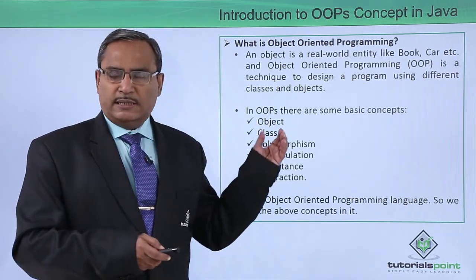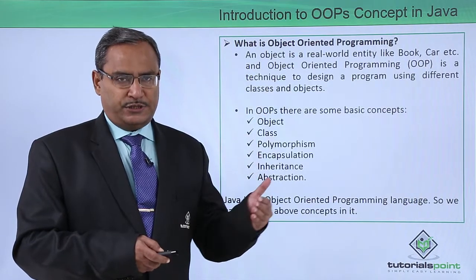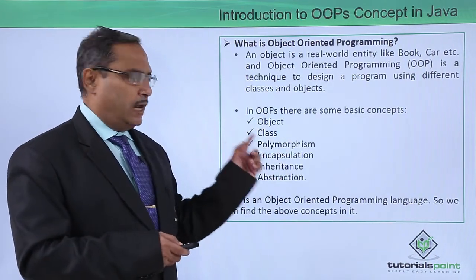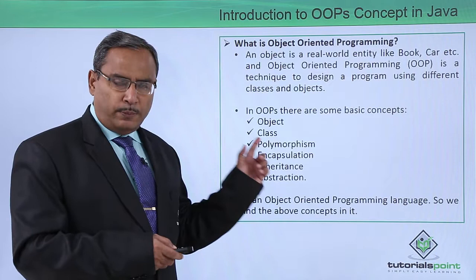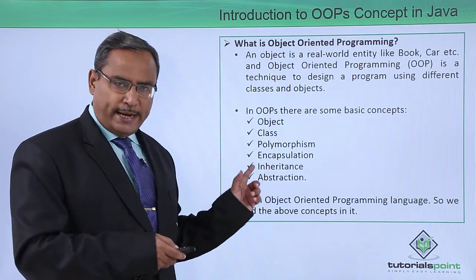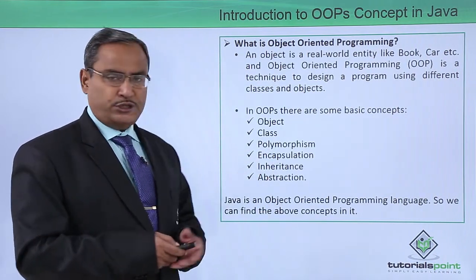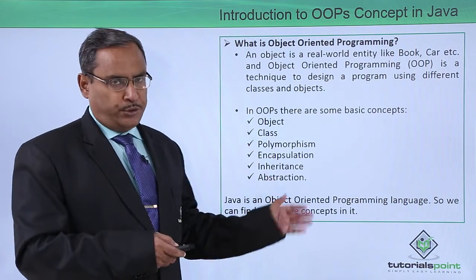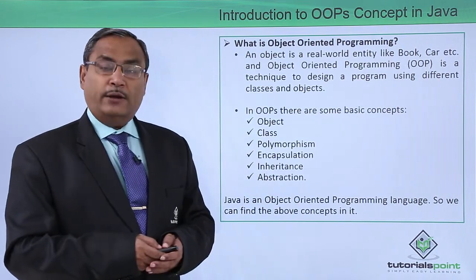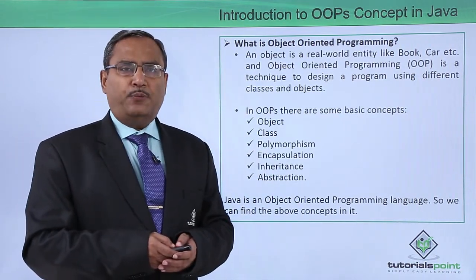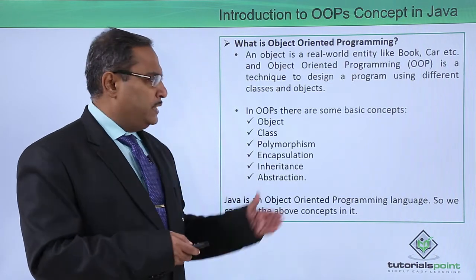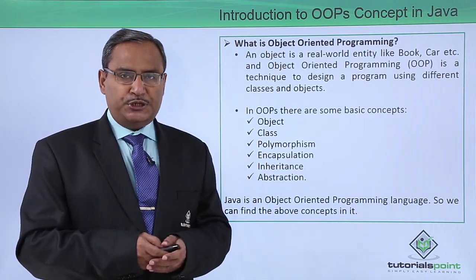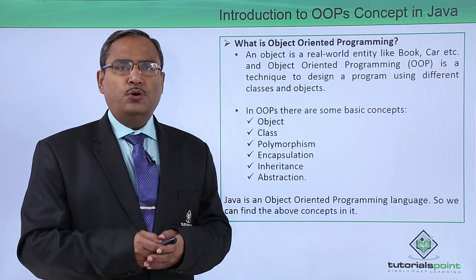In OOP, there are some basic concepts and characteristic features. These features are object, class, polymorphism, encapsulation, inheritance, and abstraction. Java is an object-oriented programming language and it also has functional programming features, which is why this chapter will be discussing these features in more detail.